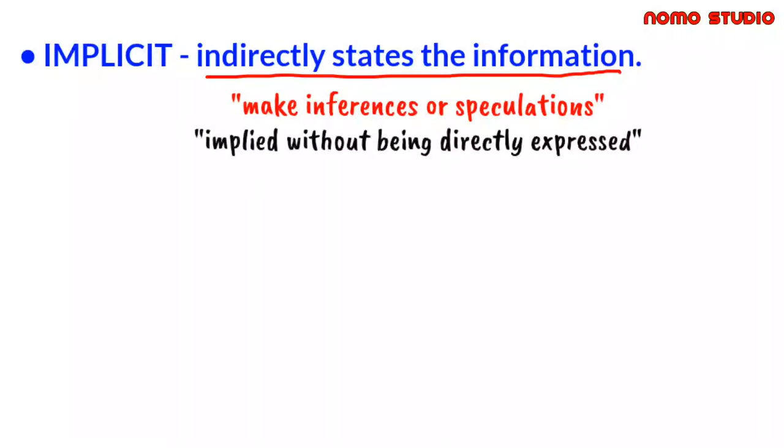When we say implicit, it states the information indirectly, which also means that it requires the reader to make inferences based on the given context. The definition of implicit is implied or understood, though not plainly or directly expressed. Something is implicit when it is not directly stated, but is either suggested in the wording or necessary to effectuate the purpose.